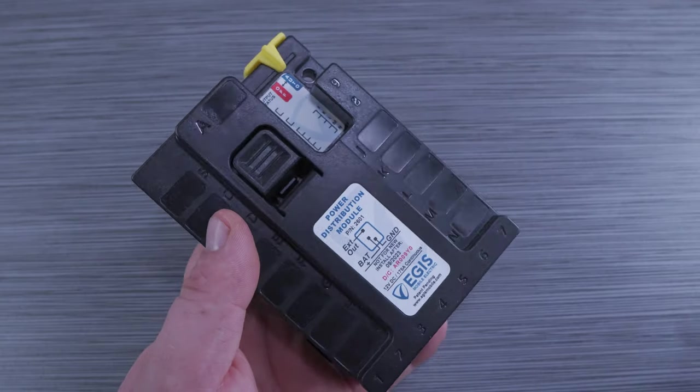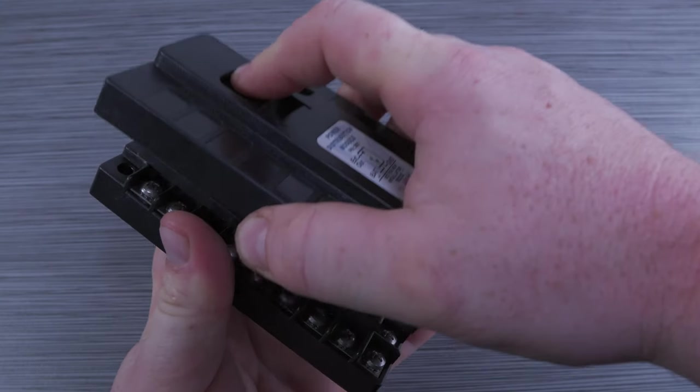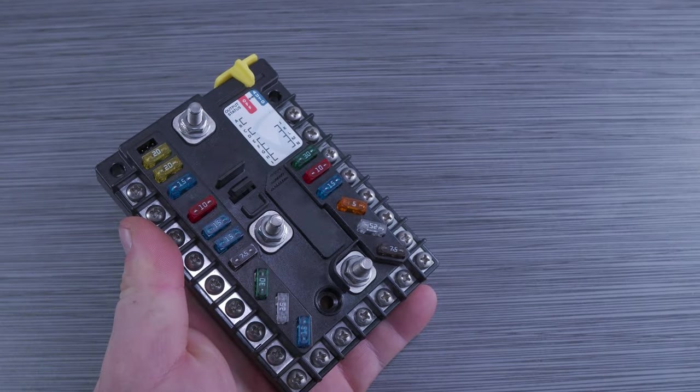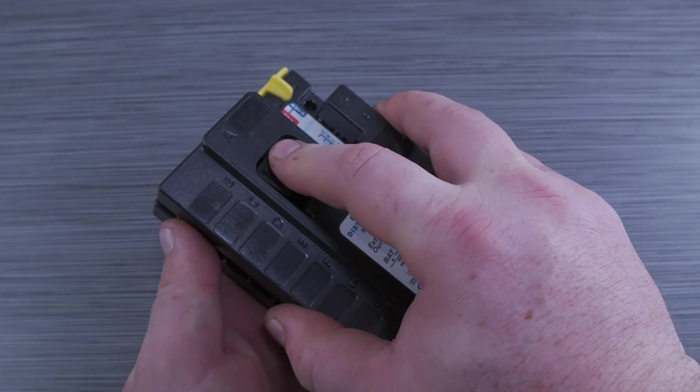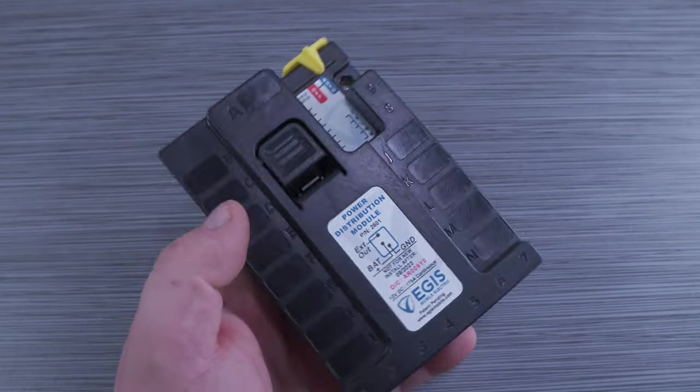To remove the cover, press this push button here in the center, grab the outside edges of the cover and lift straight away from the device. To reinstall it, simply press the cover onto the base until the cover latch snaps into engagement and you are in business.